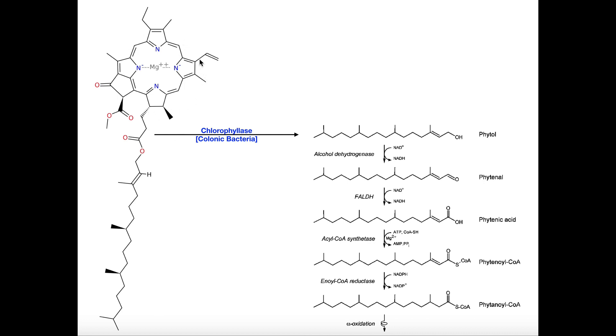In humans, the rest of this macrocyclic structure just gets excreted. We don't really care about that. But the phytol can actually be absorbed. And this process I'm about to show you, this is not alpha oxidation, but it is necessary in order to get to alpha oxidation. And this process is thought to occur entirely within the peroxisome.